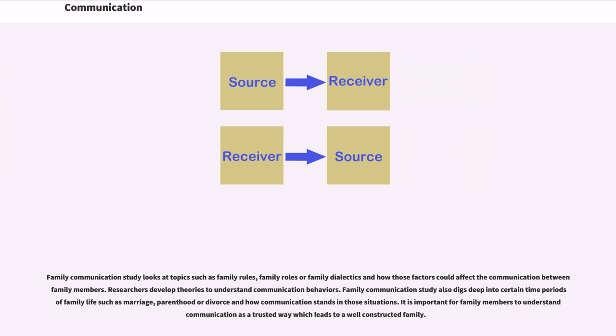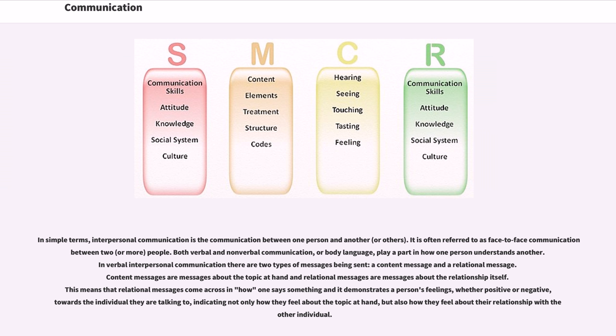In simple terms, interpersonal communication is the communication between one person and another or others. It is often referred to as face-to-face communication between two or more people. Both verbal and non-verbal communication, or body language, play a part in how one person understands another. In verbal interpersonal communication, there are two types of messages being sent: a content message and a relational message. Content messages are messages about the topic at hand, and relational messages are messages about the relationship itself. This means that relational messages come across in how one says something and it demonstrates a person's feelings, whether positive or negative, towards the individual they are talking to, indicating not only how they feel about the topic at hand but also how they feel about their relationship with the other individual.